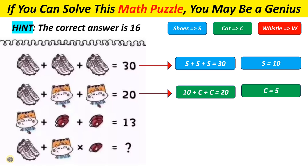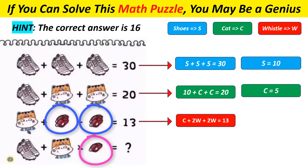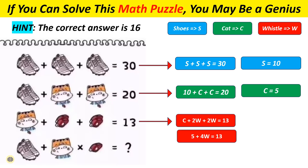Now look closely at the next equation before you jump into it. In the third equation, there are two whistles in each line but the final one only has one whistle. So 5 plus 2W plus 2W equals 13. If 4W equals 8, then each whistle represents the number 2.